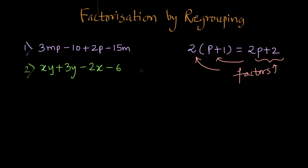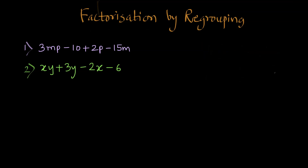Now, in the same way, we have a little larger expression here which we need to factorize. We are going to group two terms at a time to factorize them. Let us see the first two terms of this first expression. The first two terms are 3MP and minus 10. The first thing we need to understand is whether there are any common factors between 3MP and minus 10.